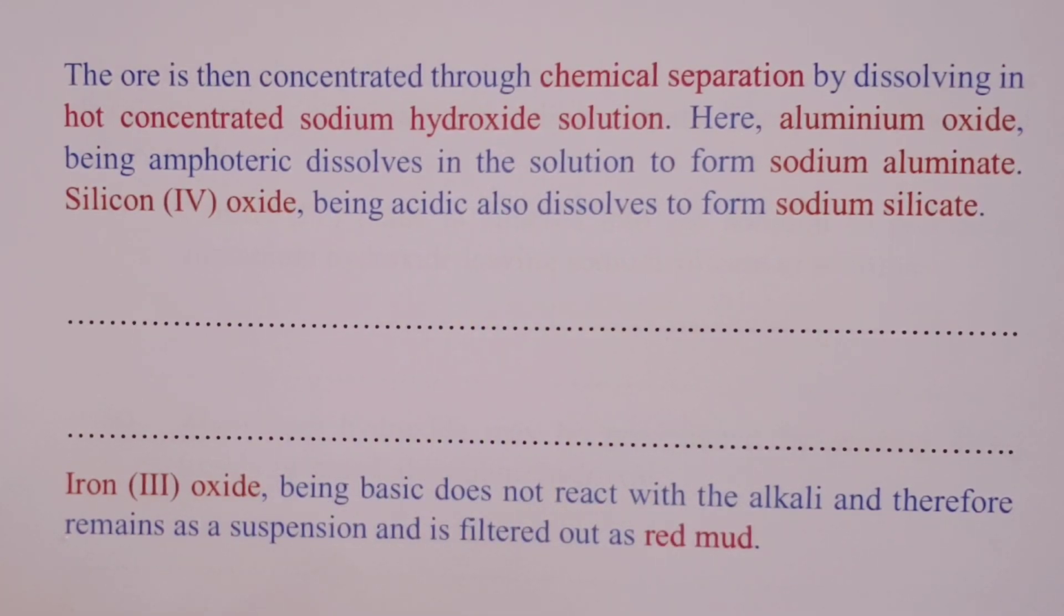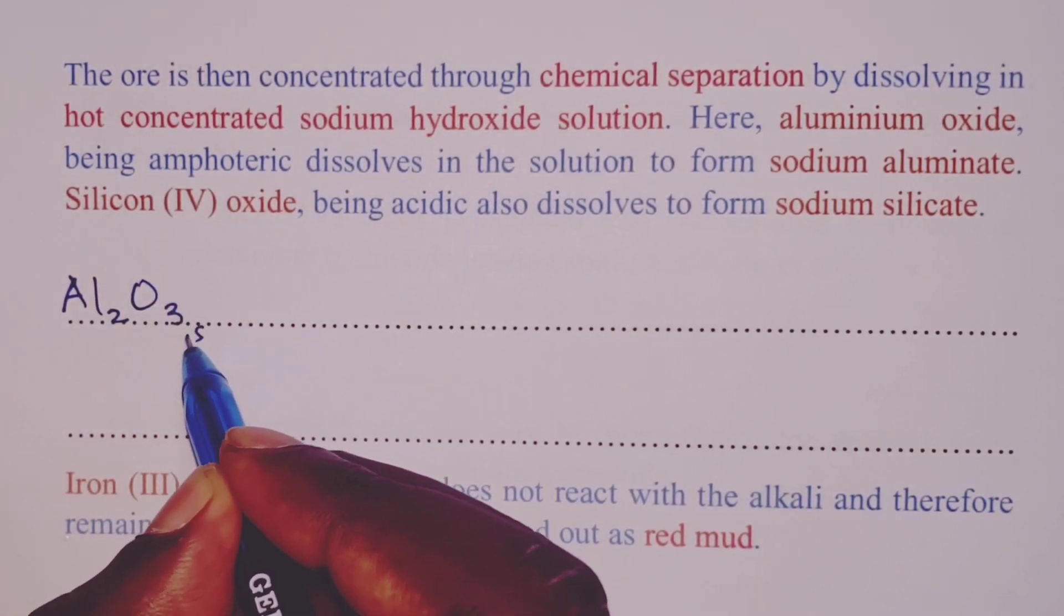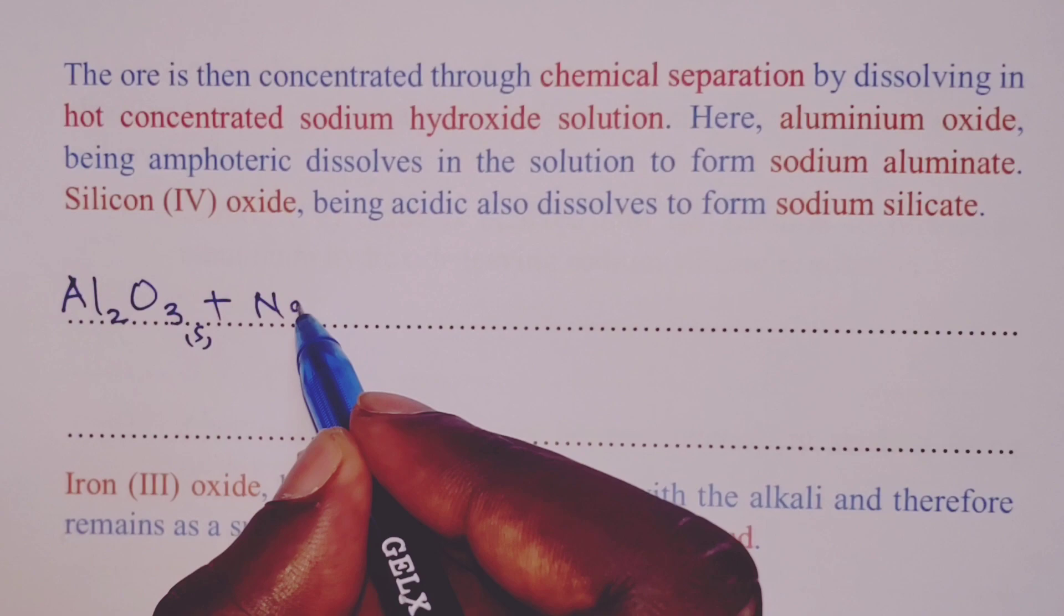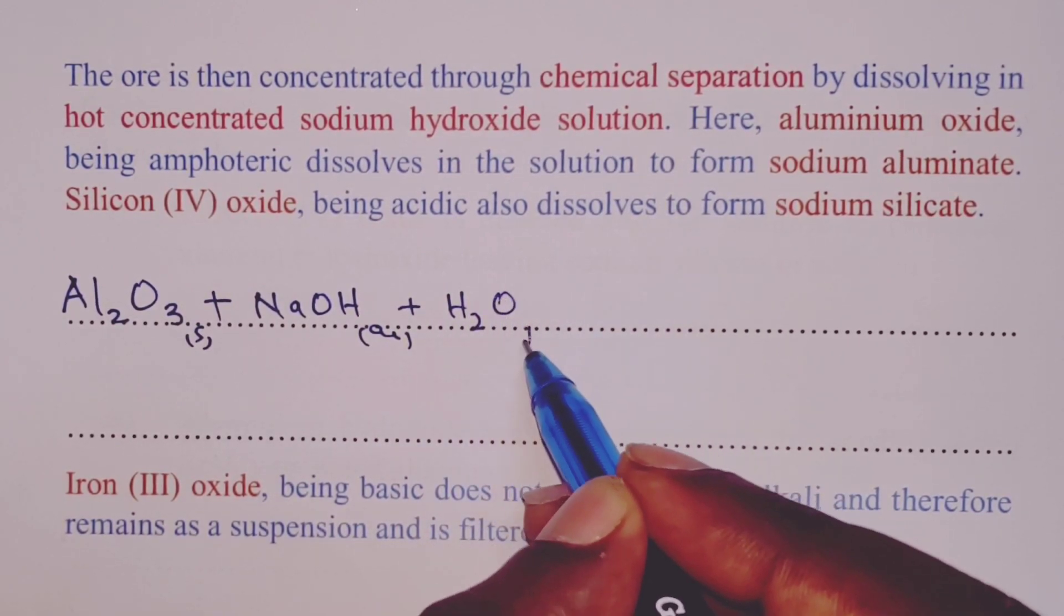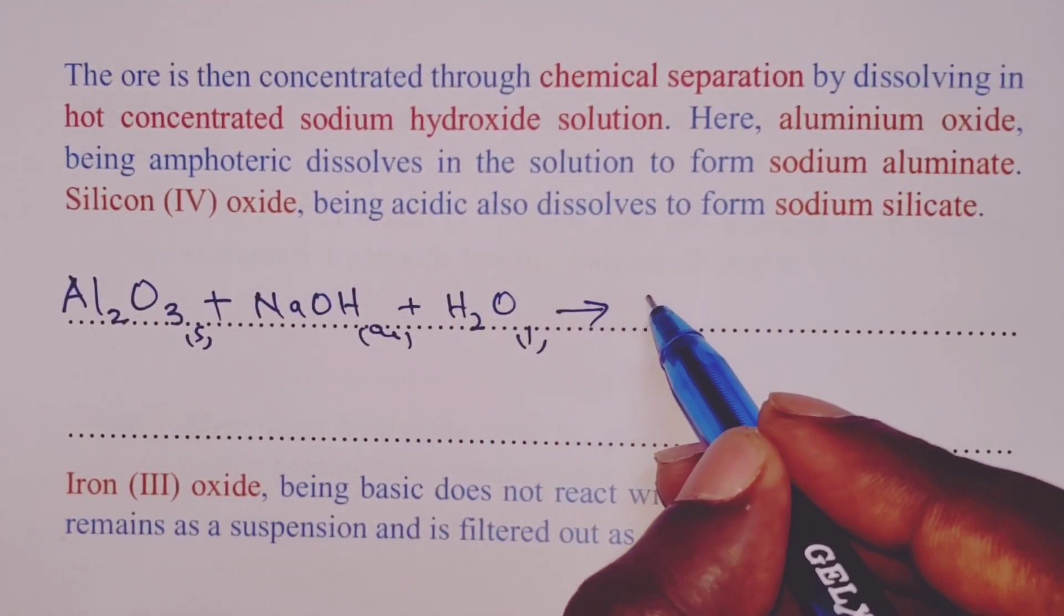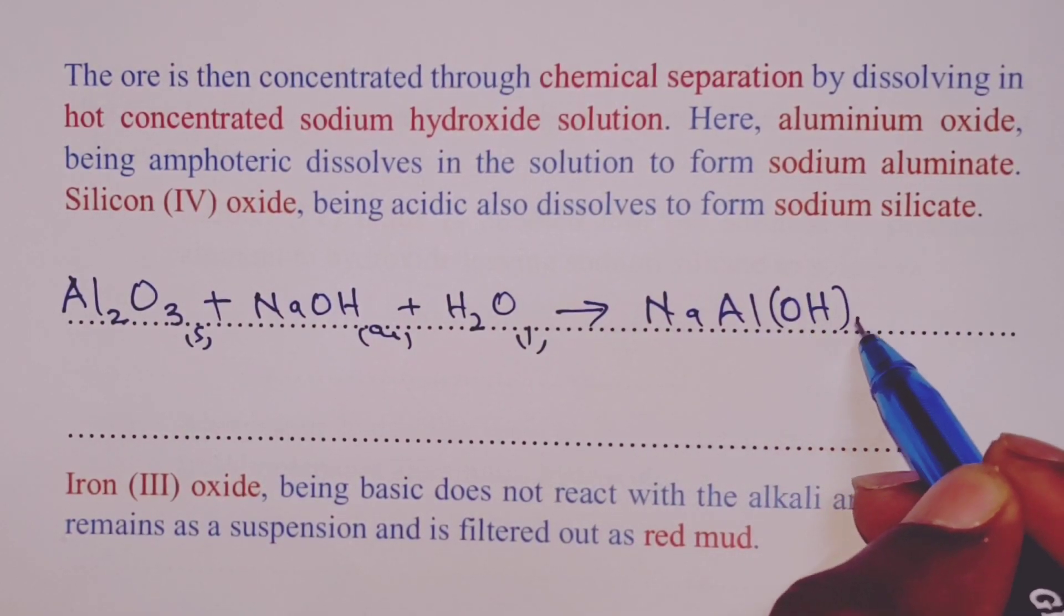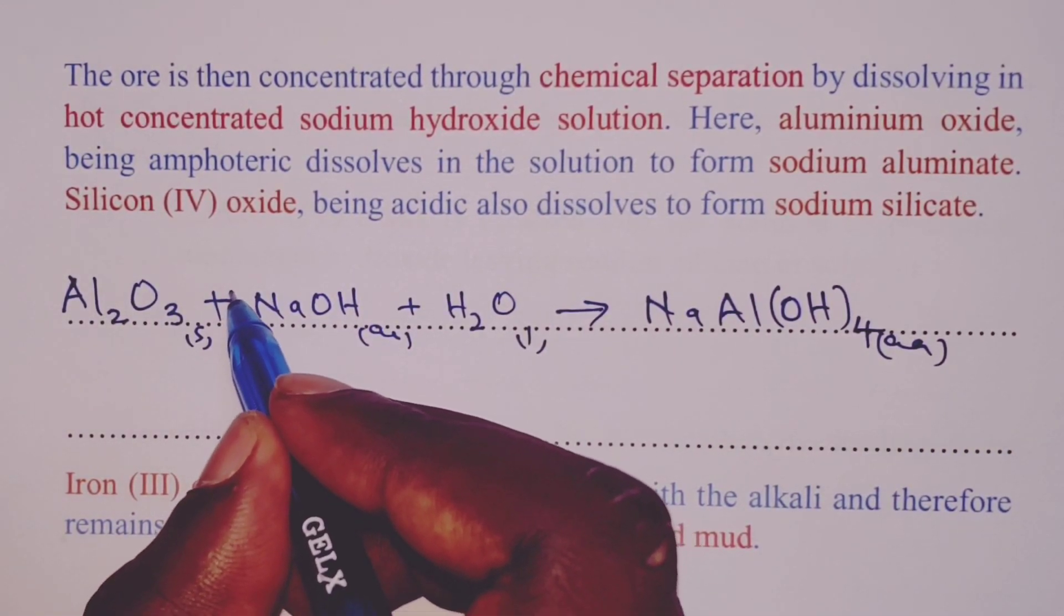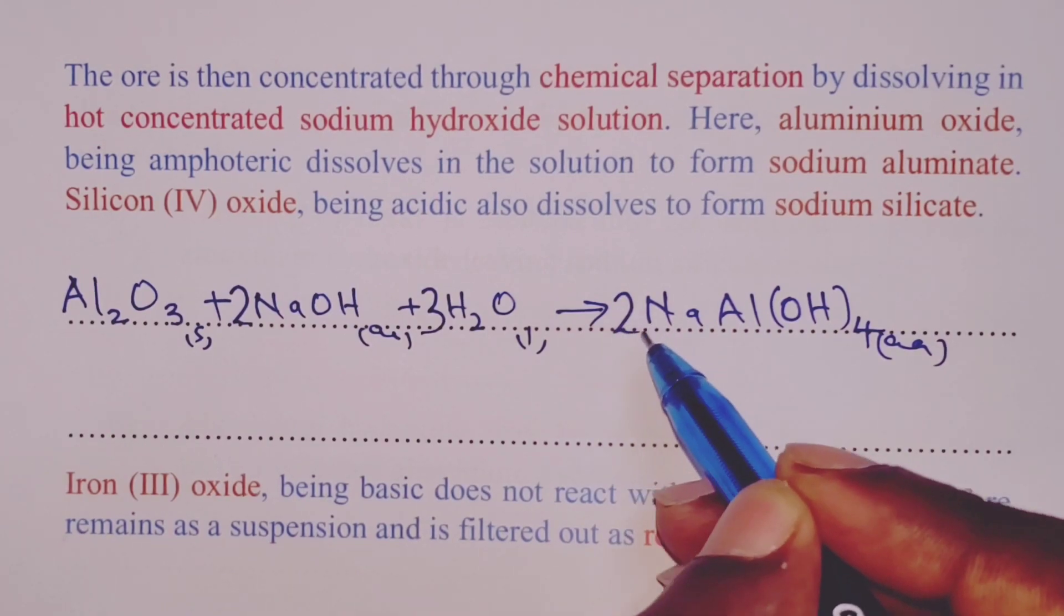Let us go ahead and write the equations for the two reactions, beginning with aluminum oxide having lost the water of crystallization in the heating process. This will react with sodium hydroxide, and of course there is some water to form the sodium aluminate. Our product is aqueous because it will dissolve in the alkali. To balance, there is a 2 on sodium hydroxide, a 3 on water, and a 2 on sodium aluminate.